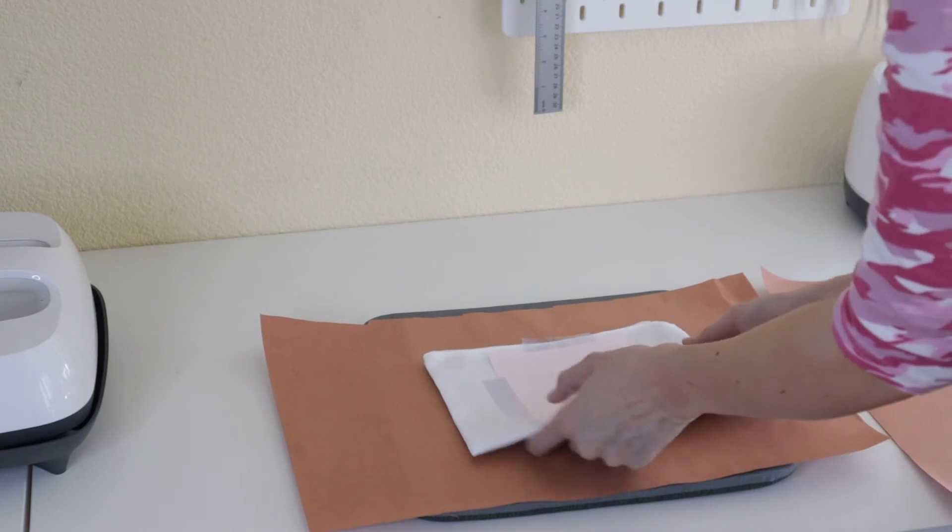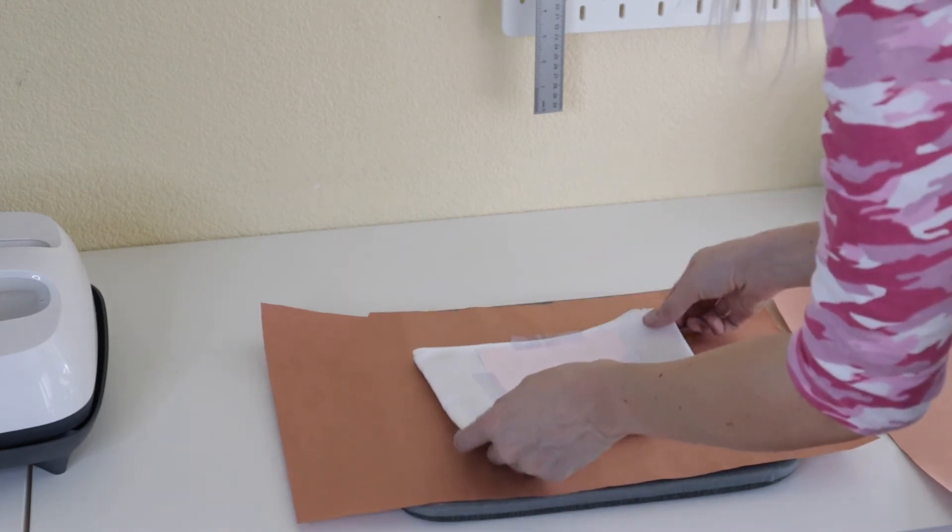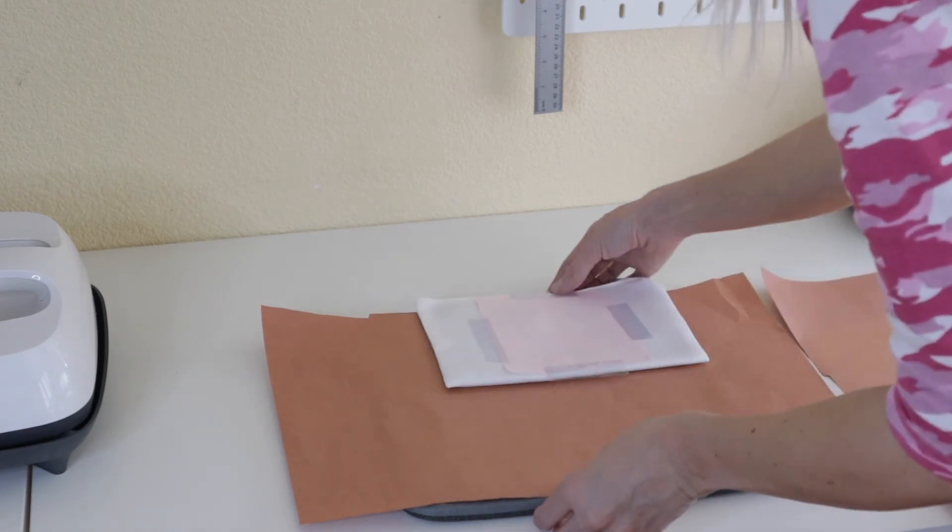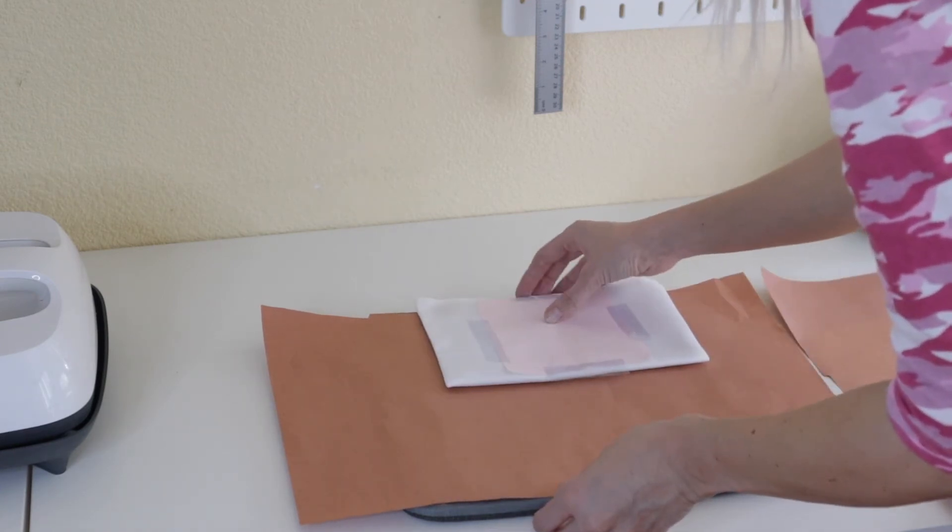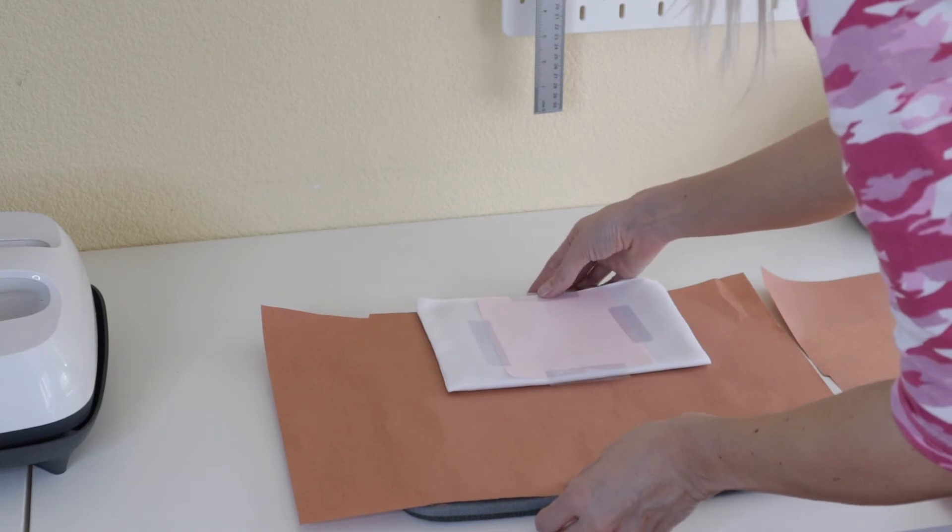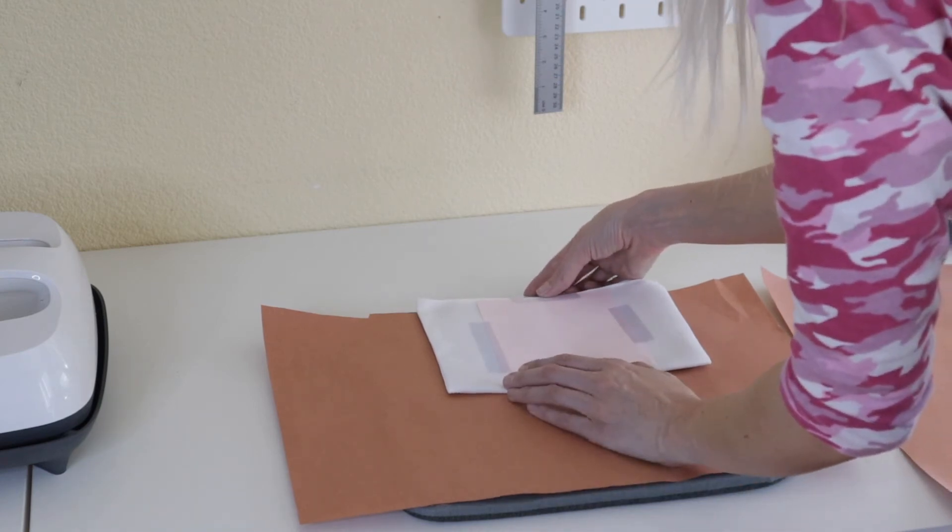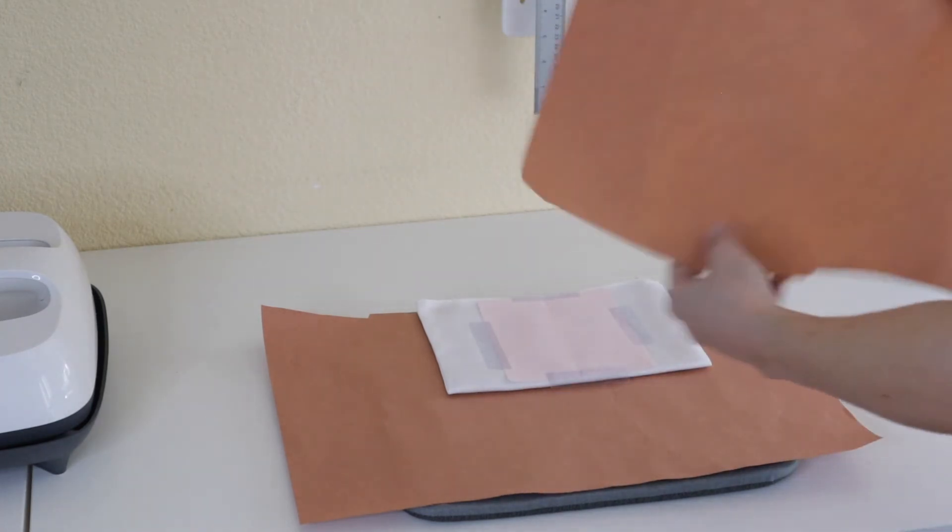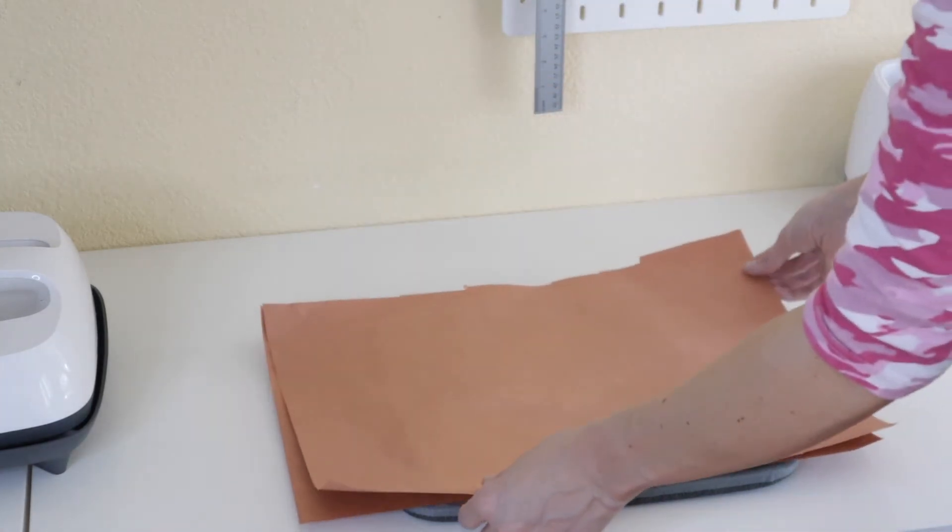Okay next I'm gonna move this to the edge of my mat so the zipper hangs off because I don't want to press the zipper. I want to make sure that my whole image is still on the mat though. Okay that looks good so now I'm gonna cover it with butcher paper and now I'm ready to press it.